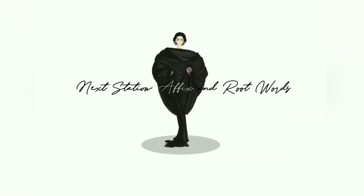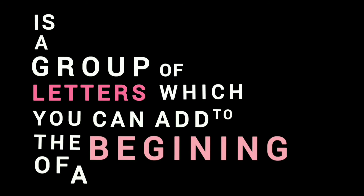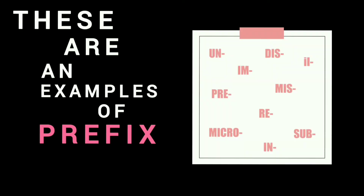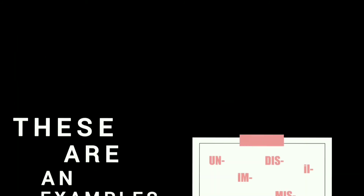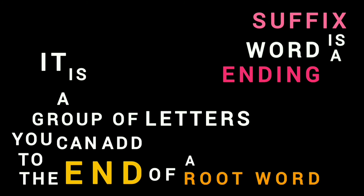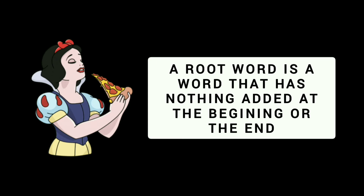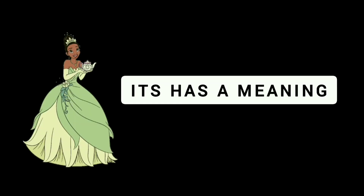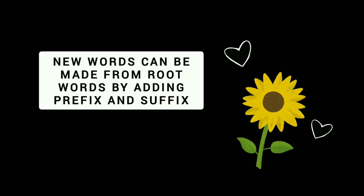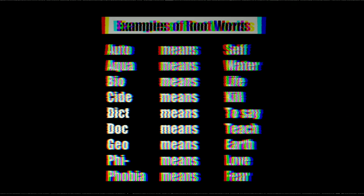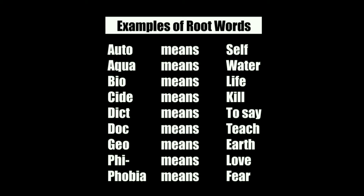Next, I will be talking about affixes and root words. Affixes consist of prefix and suffix. A prefix is a group of letters which you can add to the beginning of a root word. These are some examples of prefix words. A root word is a word that has nothing added at the beginning or the end — it stands on its own, has meaning, and new words can be made from root words by adding a prefix or suffix. These are some examples of root words I have learned in this course.